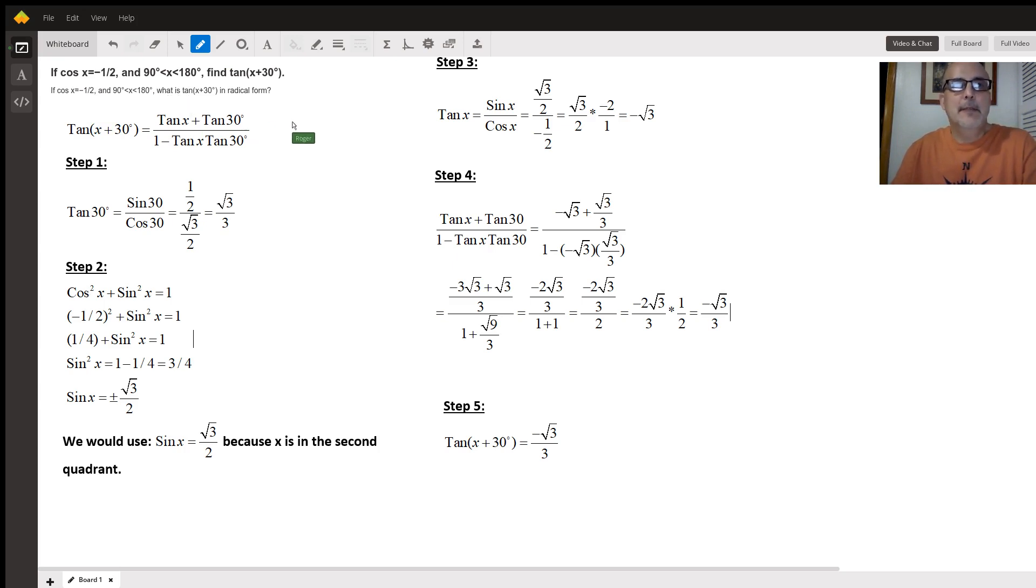Now the first thing I'm going to do is look up the formula for the sum of two angles for tangent. That's an identity and it says the tangent of alpha plus beta equals the tangent of alpha plus the tangent of beta divided by one minus the tangent of alpha times the tangent of beta. I'm going to substitute x and 30 and that's where I get this equation right here.